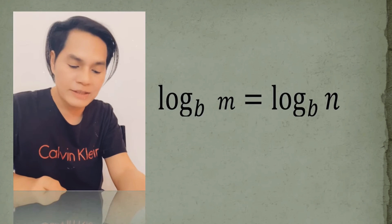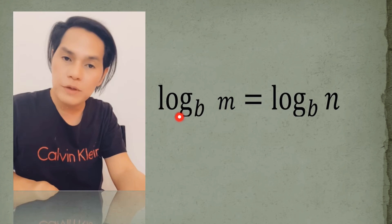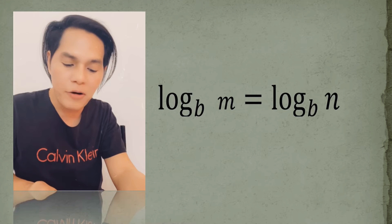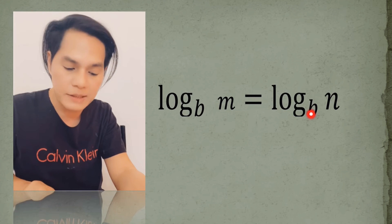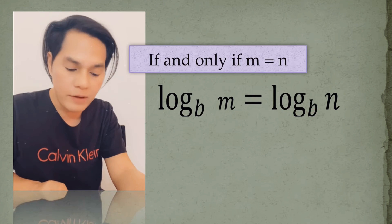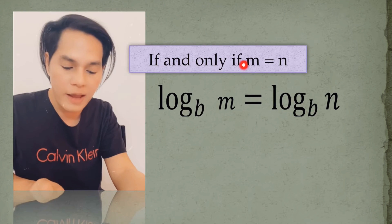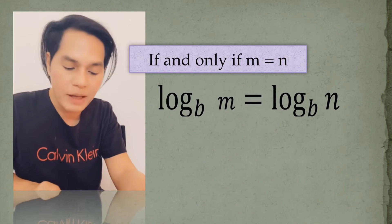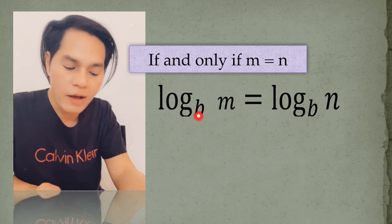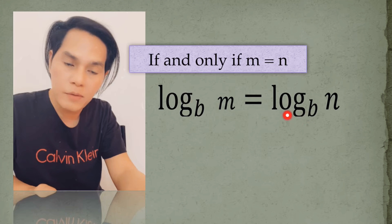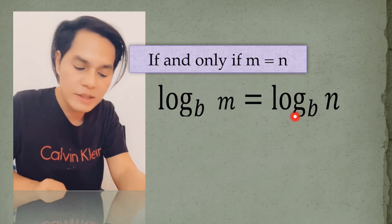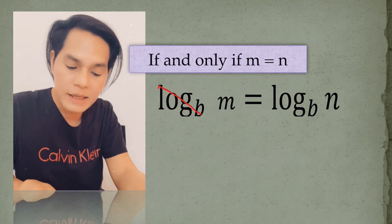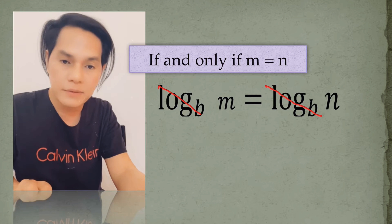Now for our last law of logarithm: the log of m to the base b is equal to the log of n to the base b if and only if m is equal to n. Since we have the logarithm of the same base on both sides, we can simply cancel the log and the base, giving us m is equal to n.